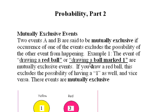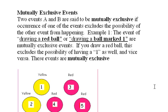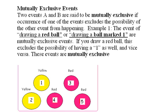Example 1: the event of drawing a red ball or drawing a ball marked 1. If you look at these two events, they're mutually exclusive events. If you draw a red ball, you can't get a ball that's marked 1. And vice versa, if you draw a ball marked 1, it excludes the possibility of having a red ball. So these two events are mutually exclusive.